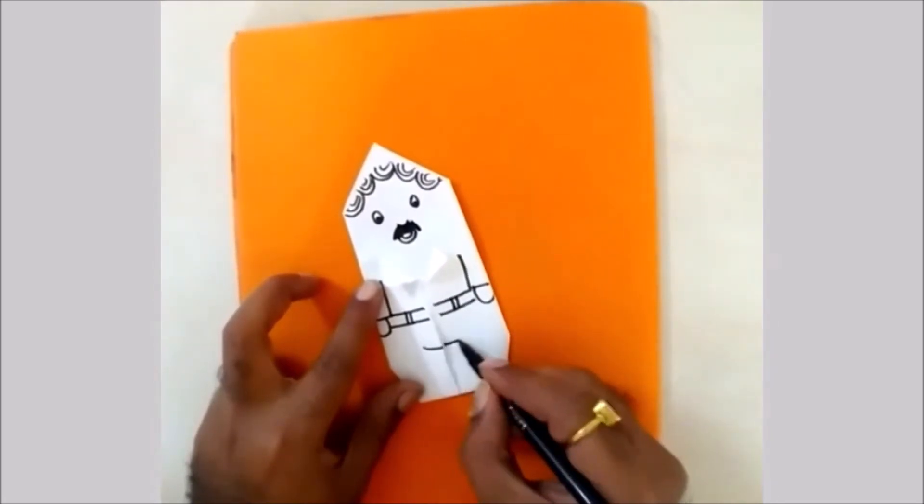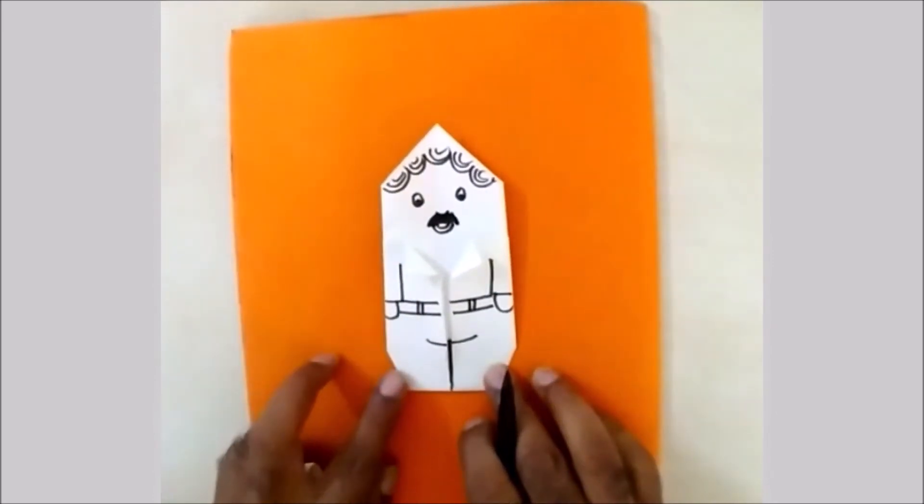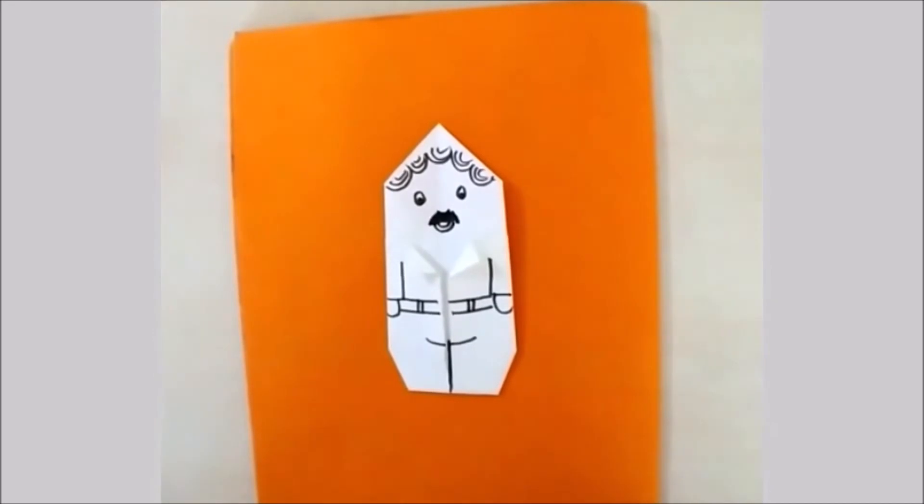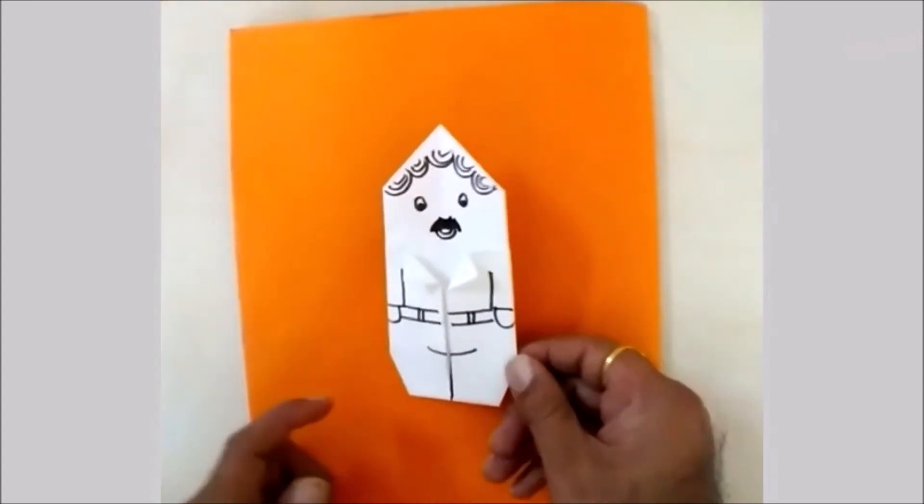One curve line for showing the pant and a straight line for showing the bifurcation of the pant. Here one man is fully ready. Now if you want to make a whole family, you can see here I can make a whole family by using this type of technique.